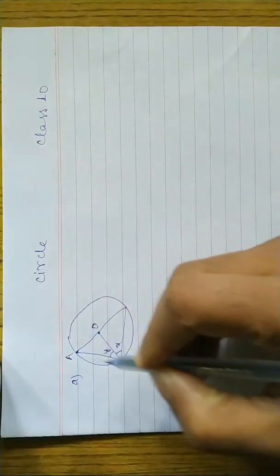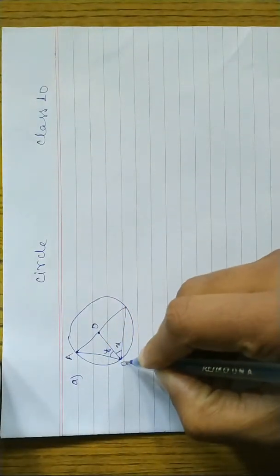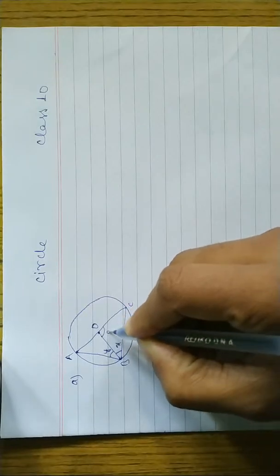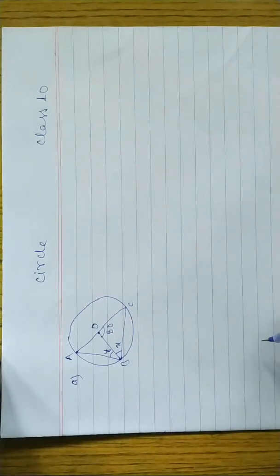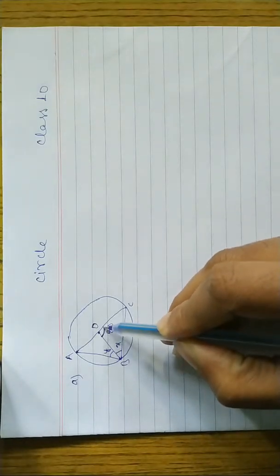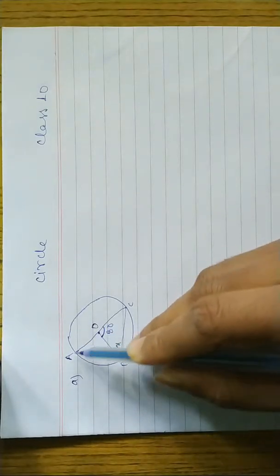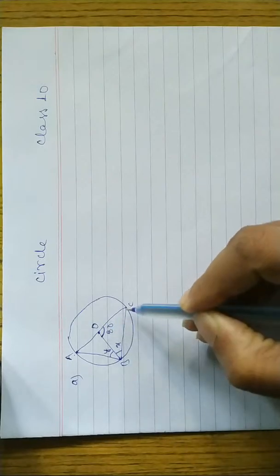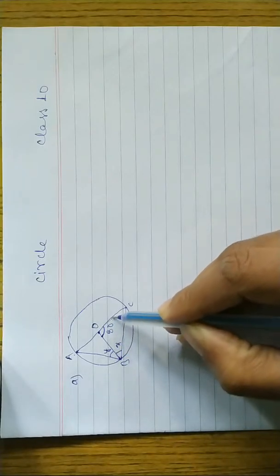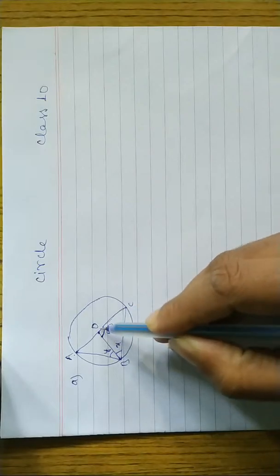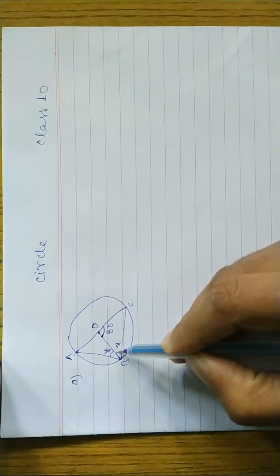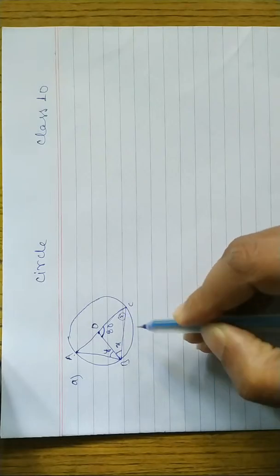Today I am going to do seven to eight questions. In question one, we have to find the value of x and y. OA, OB, and OC are radii. Since OB and OC are equal radii, this is an isosceles triangle, so the base angles are equal. If this angle is x, then this part is also x.